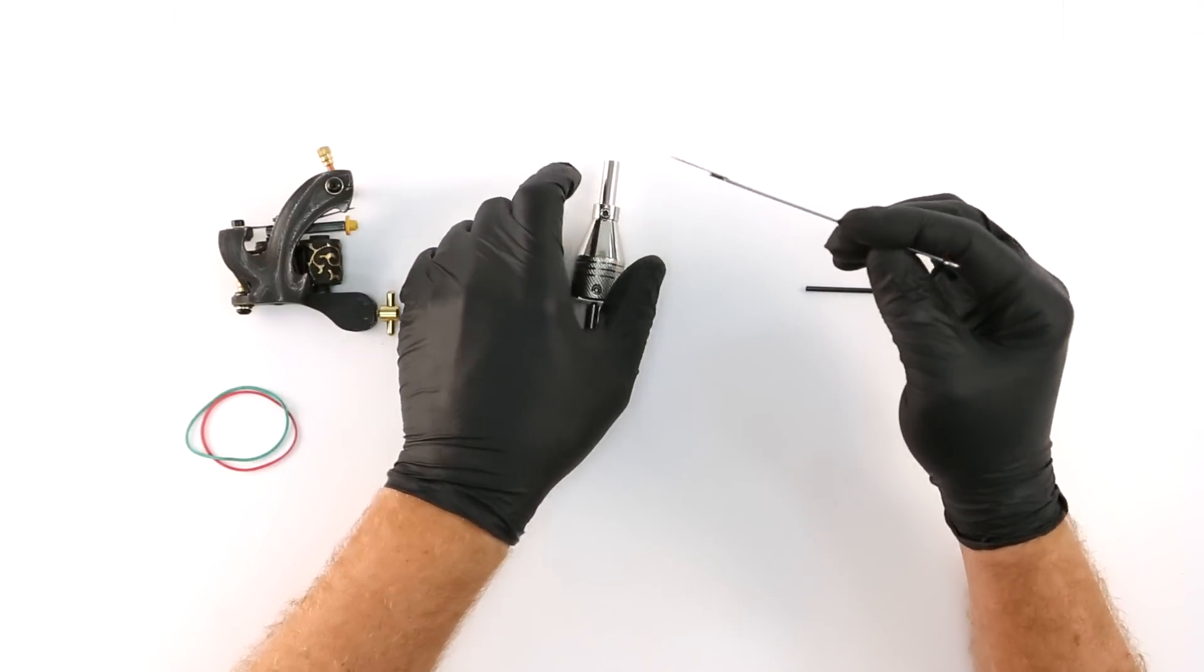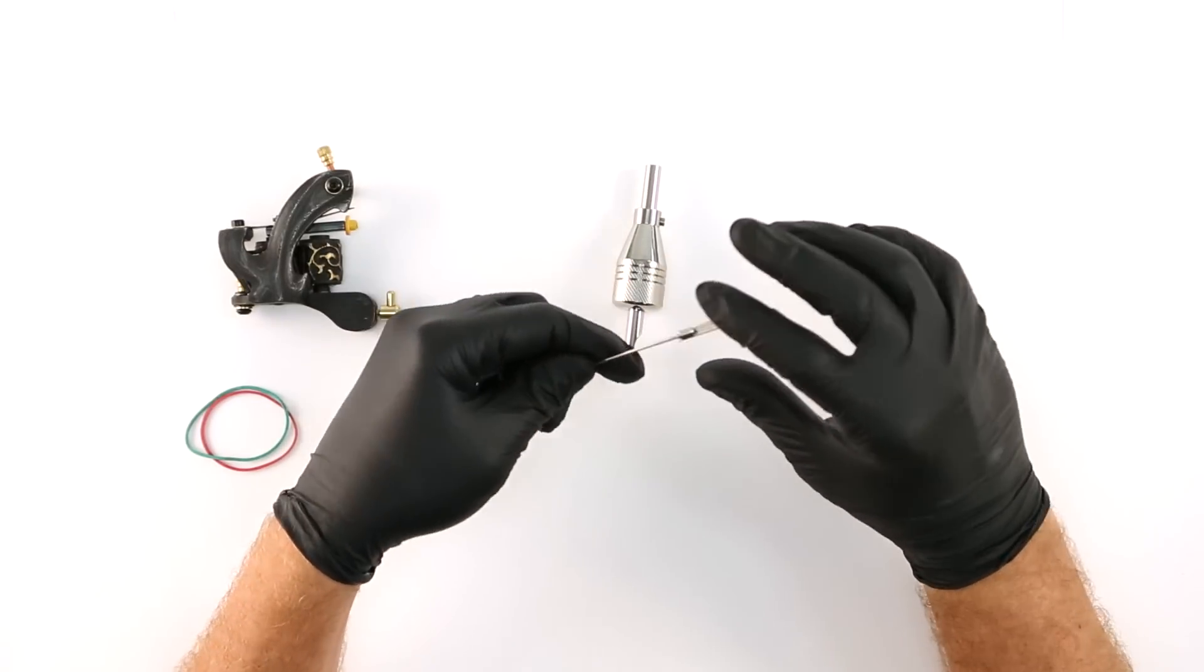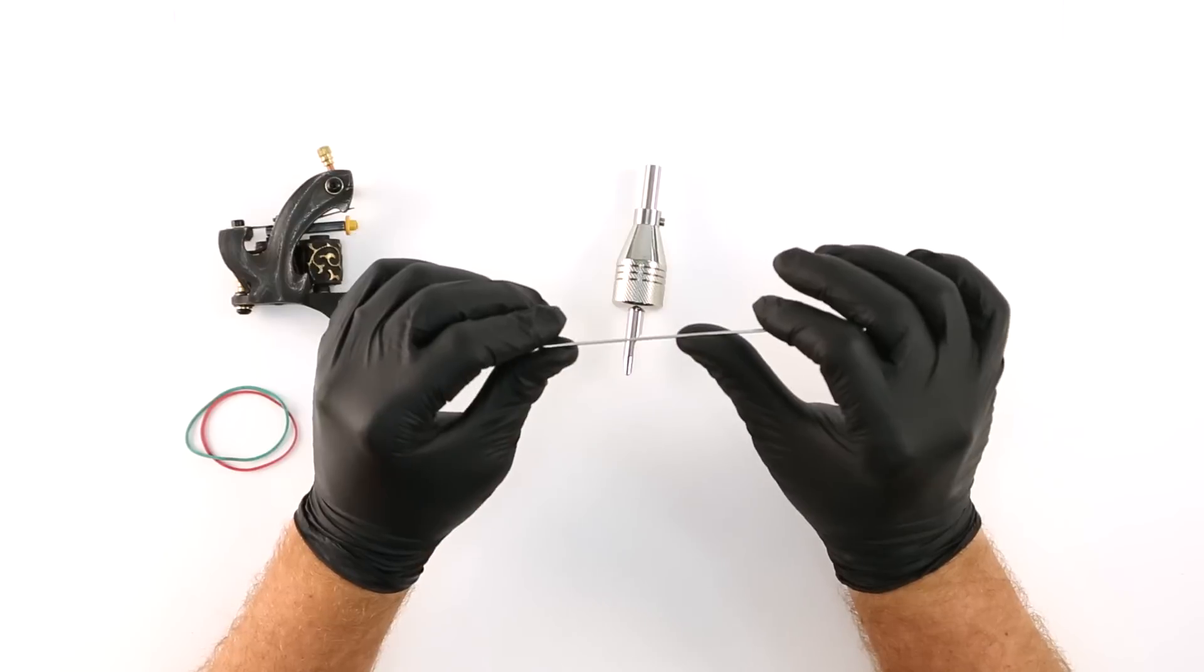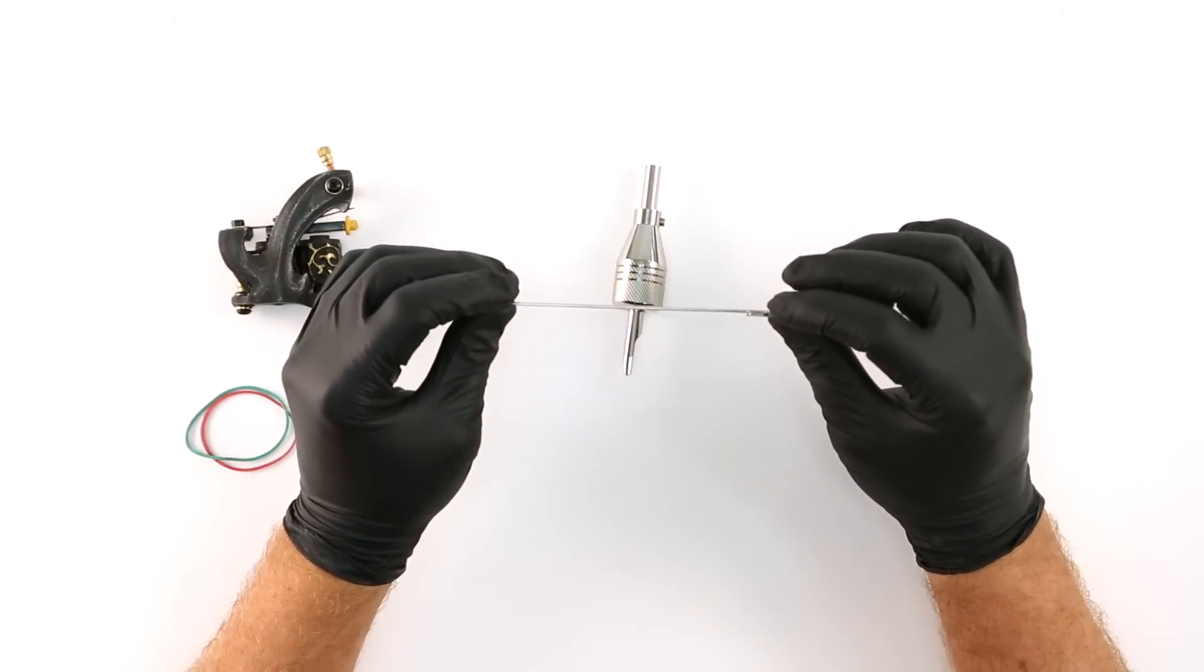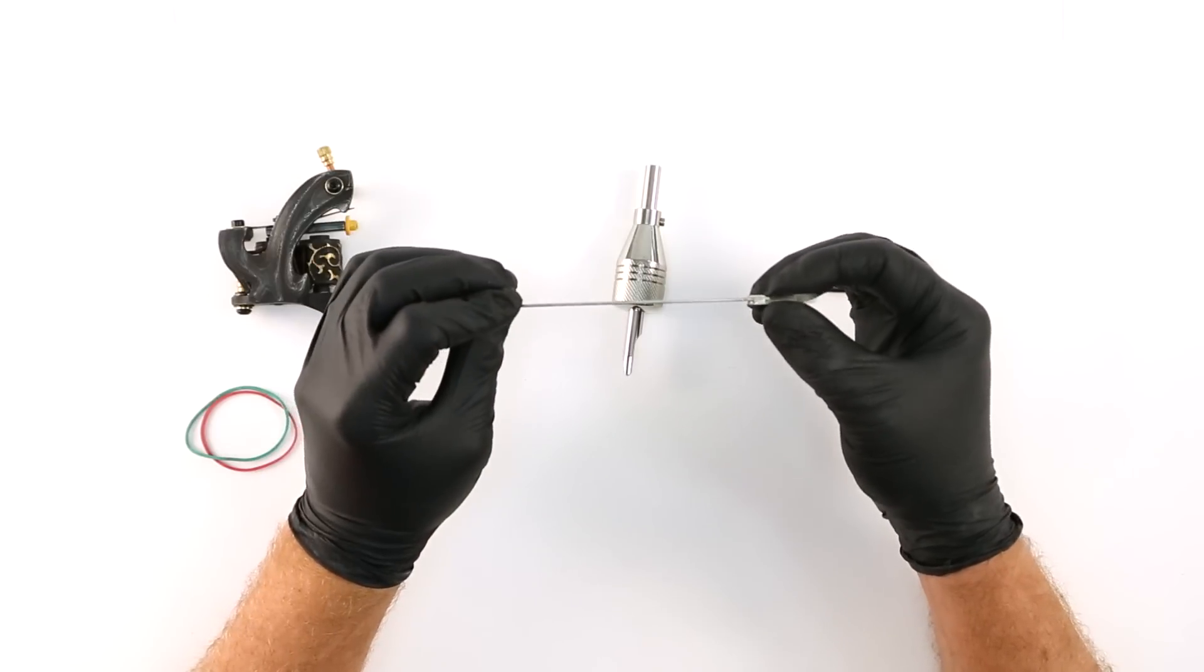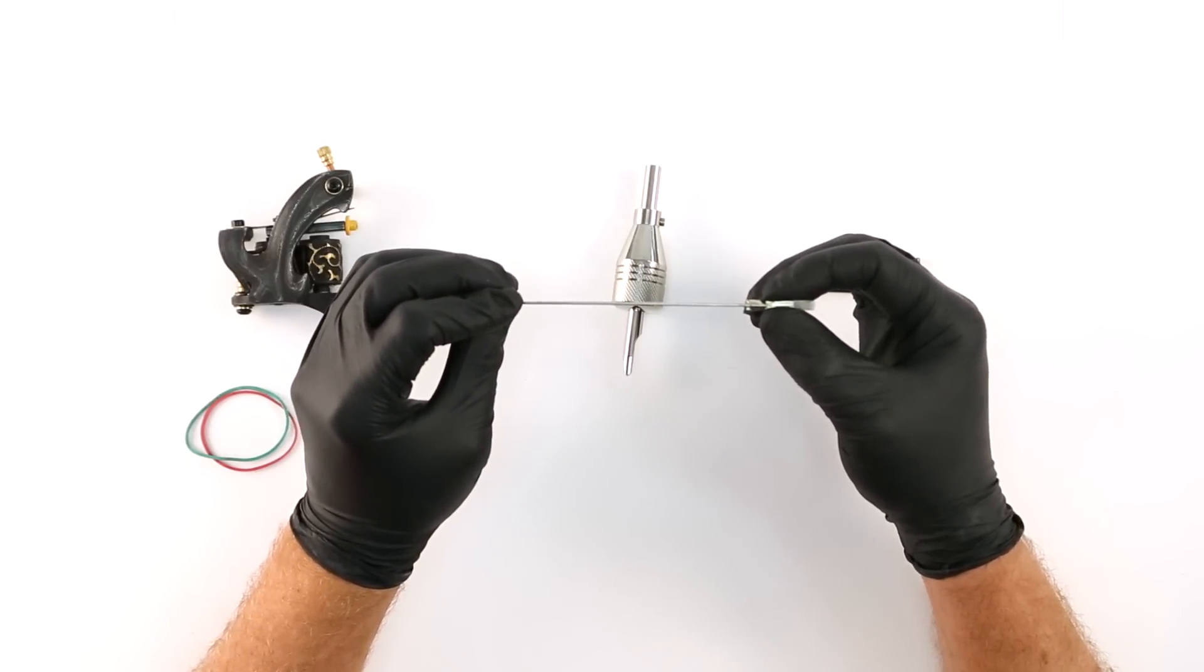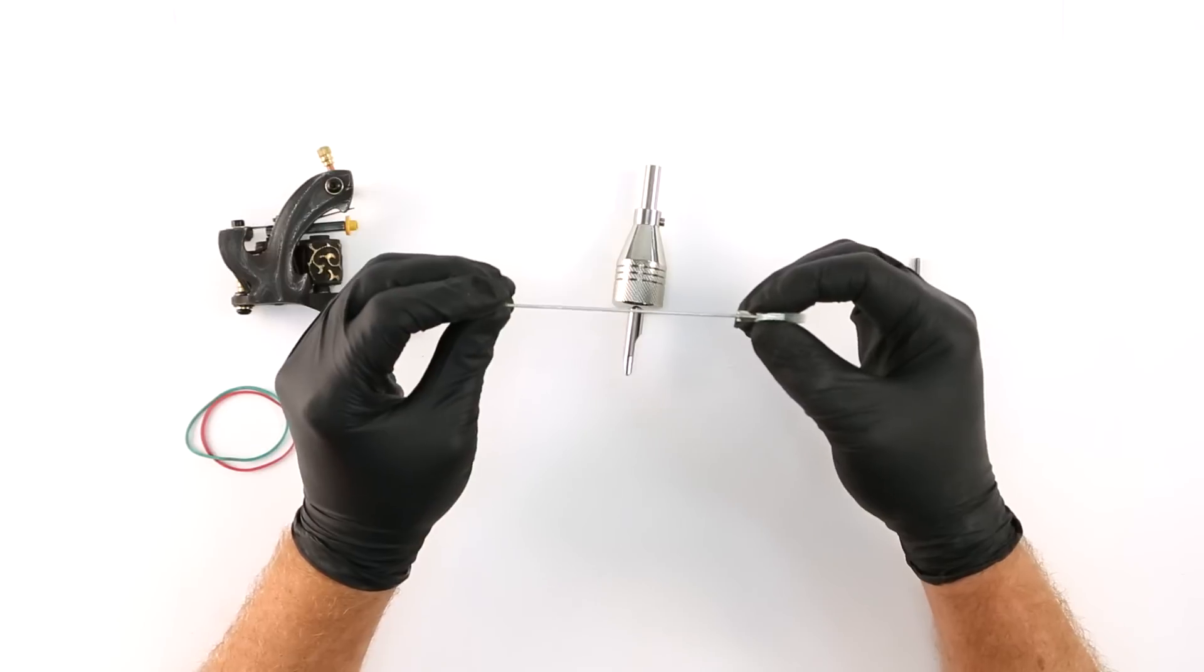Now we're almost ready to place the needle into the tube. Before we do that we need to create a slight bend in the needle. This helps compensate for the bend applied by the rubber bands you wrap around the needle to help it keep from jumping around in the tube. The bend also helps the needle grouping sit flush in the tip.